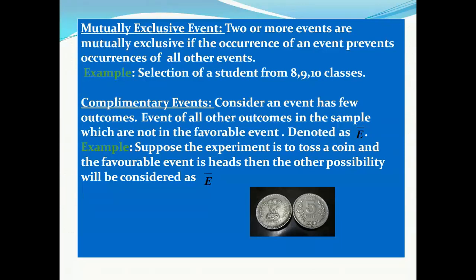Next is complementary events. Consider an event that has a few outcomes. The event of all other outcomes in the sample space which are not in the favorable event is denoted as E-bar. For example, if I am tossing a coin and I want a head to appear, but the tail comes as the output instead, that is considered as the complementary event, denoted as E-bar.